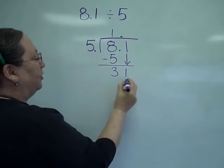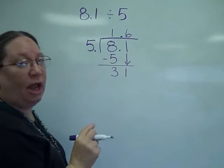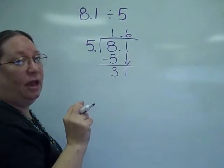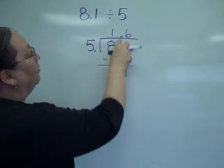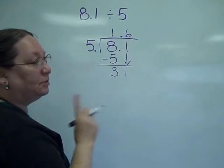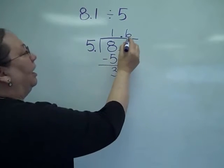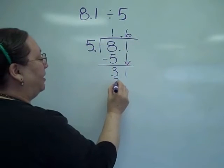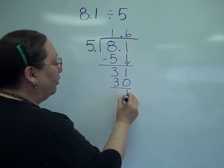5 goes into 31 six times. Here's where your lineup is very important. You've got to make sure that you are lining everything up, otherwise your decimal is going to be in the wrong position. Continuing, 6 times 5 is 30. 1 left over.